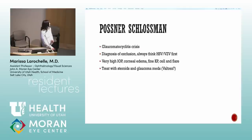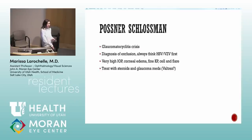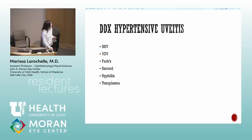Posner-Schlossman syndrome: some debate whether this really exists or is just undiagnosed herpetic anterior uveitis. Key feature is intermittent very high IOP with inflammation. I would almost always give a course of valacyclovir. Hypertensive uveitides include herpetic, Fuchs, syphilis, toxo, and also add CMV to that list.